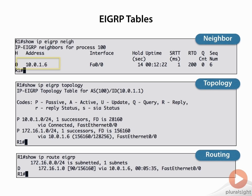Looking at the neighbor table, the address we see is the neighbor's address, and we see the interface where that neighbor is seen. Looking at the 'show ip eigrp topology' table, we see the code identifier 'P', which means passive. Passive is a good thing — it means we're converged. We're not sending routing information, not doing any queries. So passive is a good state to be in, and here we're passive for prefix 10.0.1.0.